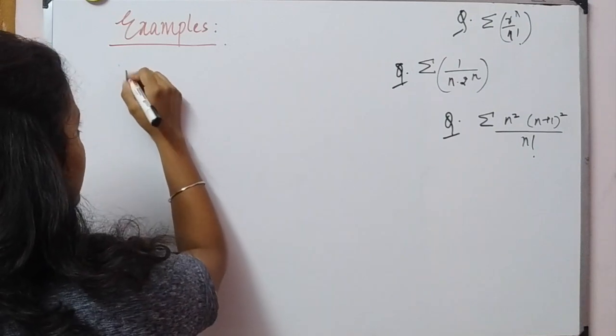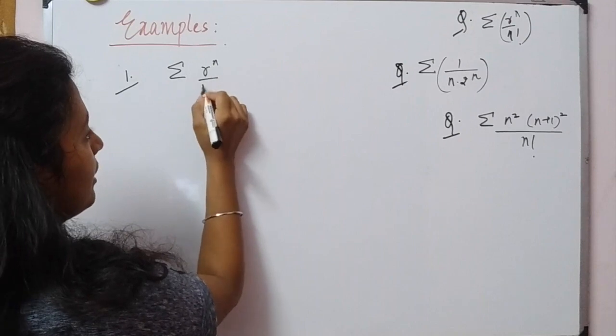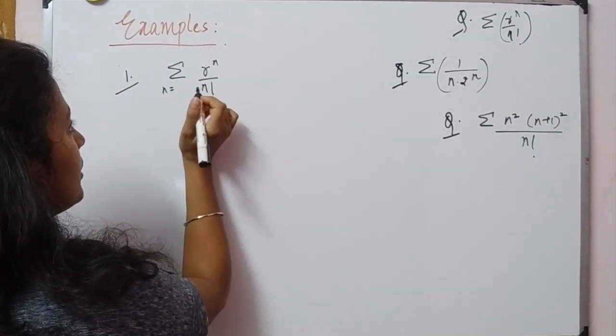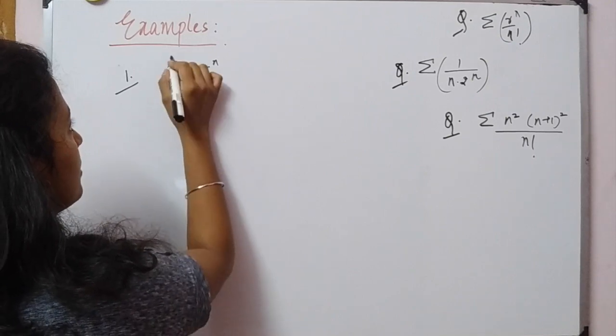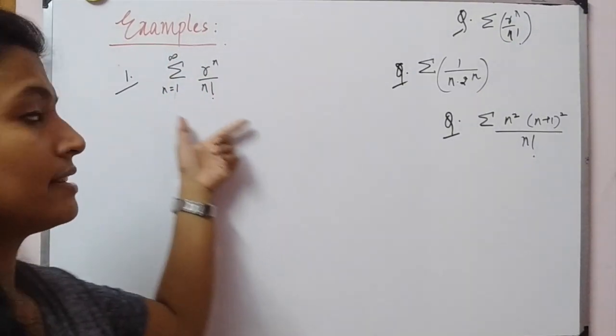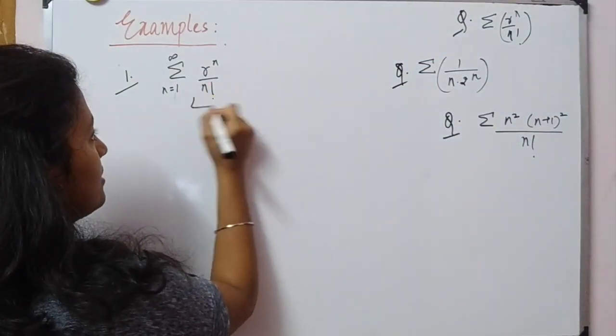Starting from the first one, we have Σ(rⁿ/n!) with n going from 1 to infinity. I think it can go from 0 as well, but let's take n going from 1 to infinity. We have to find if this series converges or not.